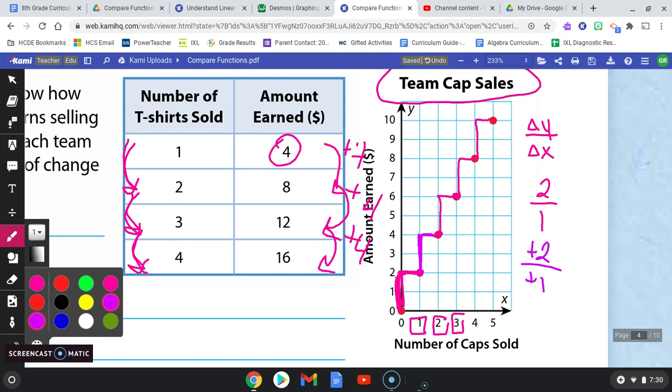So if you were to take a ruler and connect all of those ordered pairs together, would they be in a straight line? Yes. For every cap that I sell, how much money do I make? $2.